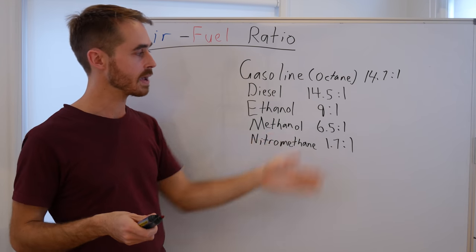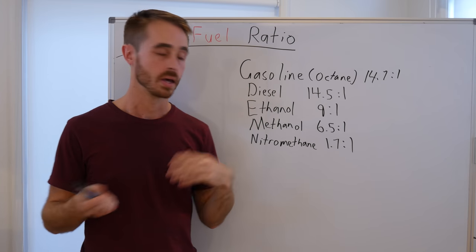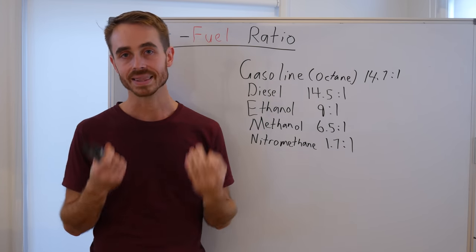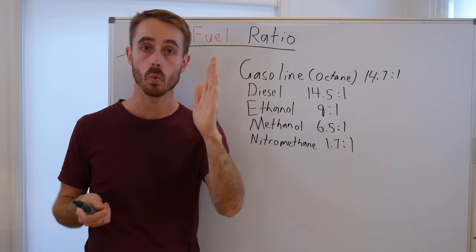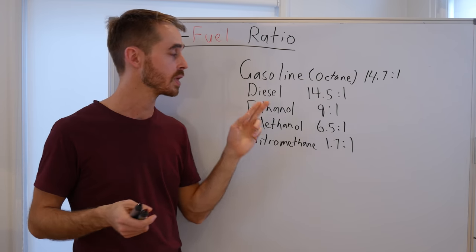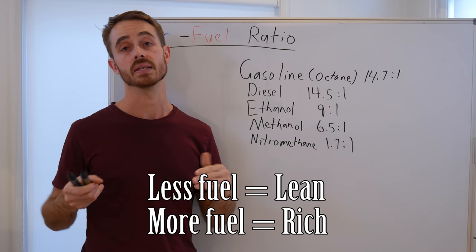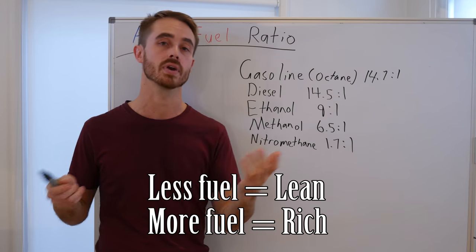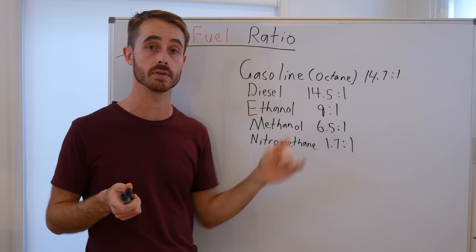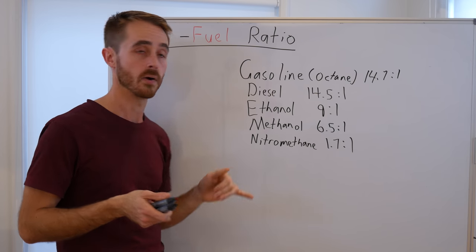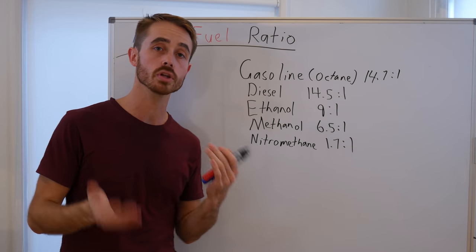The air-fuel ratio itself is a fairly abstract term — each fuel has a different number. So what I want to do is introduce the concept of lambda. Lambda is basically how rich or lean a mixture is, expressed around a value of one, where one is the stoichiometric ratio. Lower than one is rich, higher than one is lean. So a lambda of 0.95 means you're running slightly rich; 1.1 means slightly lean. The beauty of lambda is that whether you're tuning on gasoline or ethanol, you're still targeting a lambda of one for stoichiometric.